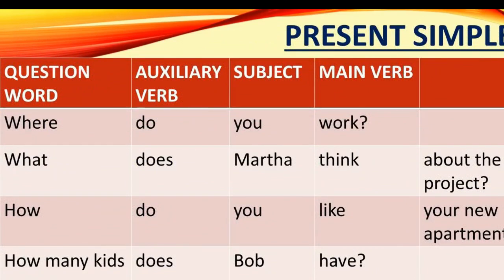Where do you work? The question word is 'where', the auxiliary verb is 'do', the subject is 'you', and the main verb is 'work'. Here are three more examples: What does Martha think about the project? How do you like your new apartment? How many kids does Bob have?